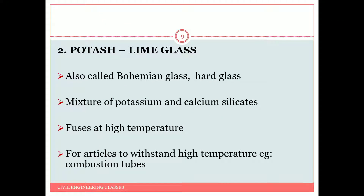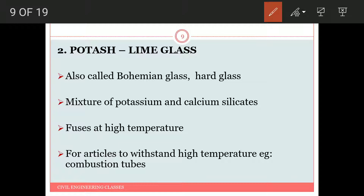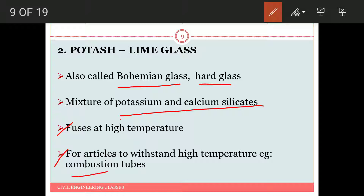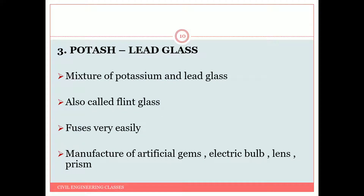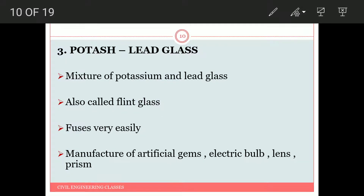Potash lime glass is also called Bohemian glass or hard glass. It is a mixture of potassium and calcium silicate. It fuses at very high temperature, so it is majorly used for articles that have to withstand very high temperatures, for example combustion tubes.